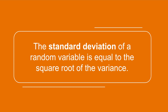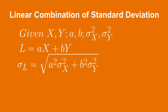Finally, to get the standard deviation of the linear combination, recall that the standard deviation of a random variable equals the square root of its variance. So we follow the variance derivation and then take the square root: σL equals the square root of the quantity a squared times the variance of X plus b squared times the variance of Y.